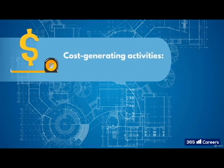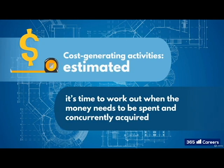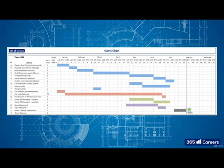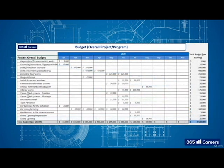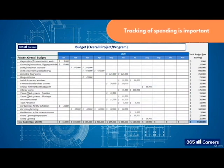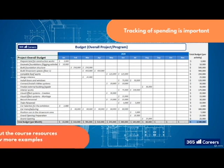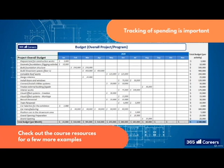Once all your cost-generating activities have their costs estimated, it's time to work out when the money needs to be spent and concurrently acquired. Use your Gantt chart to plan this, and then put it all together in your project budget. It's important to track your actual spending, so adding a column for that would make sense. But with so many different types of project, there is no one-size-fits-all project budget template. Check out the course resources for a few more examples to get a better idea.